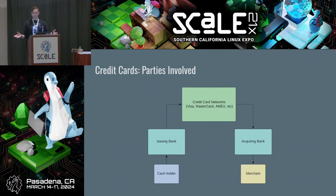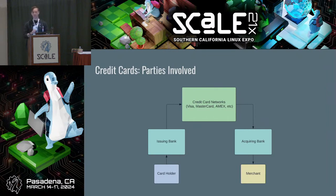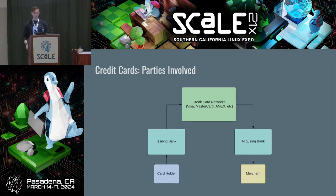So how does this system work? The payment system connects sender and receiver and transfers value. The sender would be the cardholder; the merchant would be the receiver. The card networks do this by issuing a credit card from an issuing bank — I bank with Chase, for example. The merchant, say Target, works with an acquiring bank like Wells Fargo. The card networks are in the middle to facilitate the transfer of money from the issuing bank to the acquiring bank.